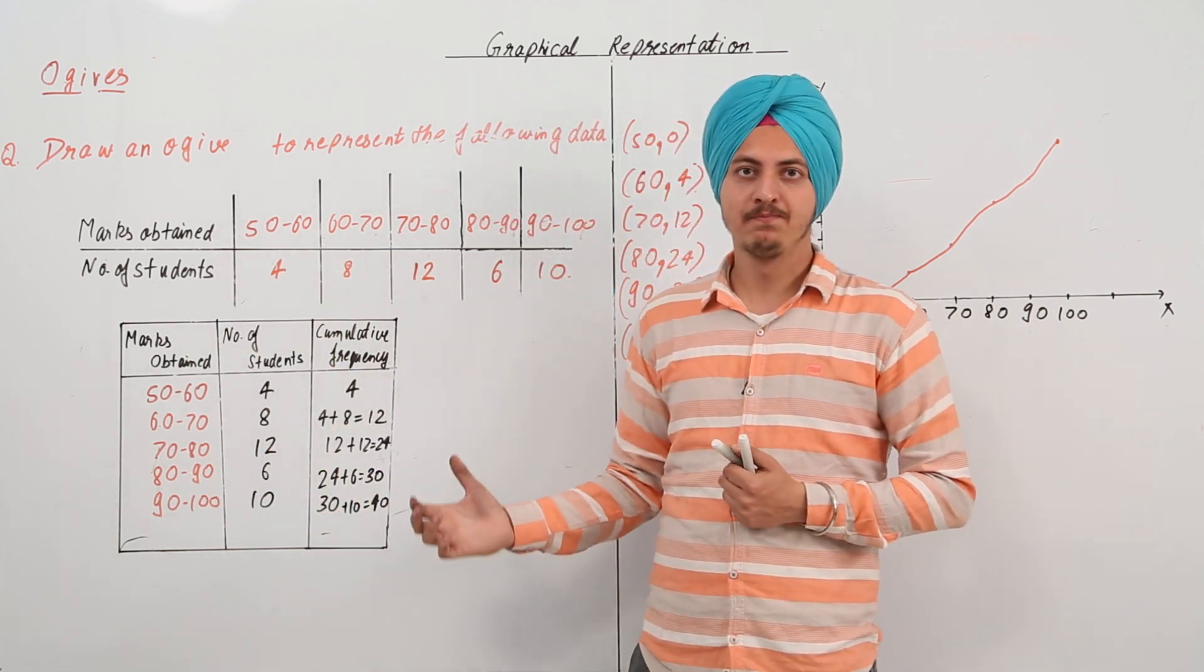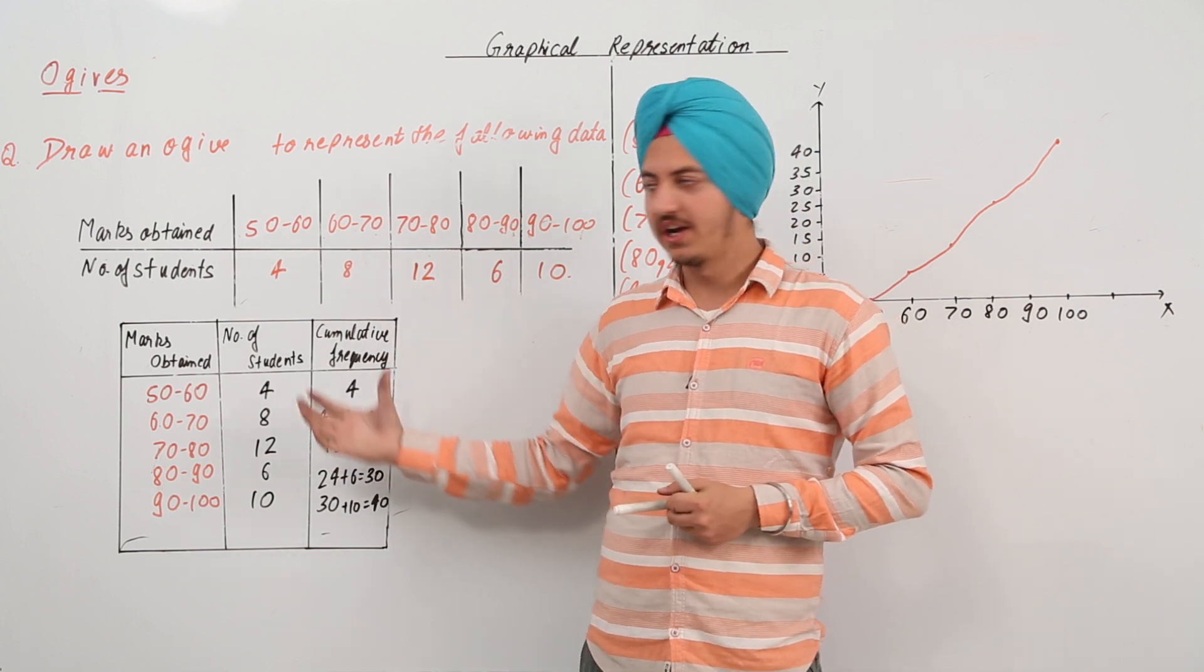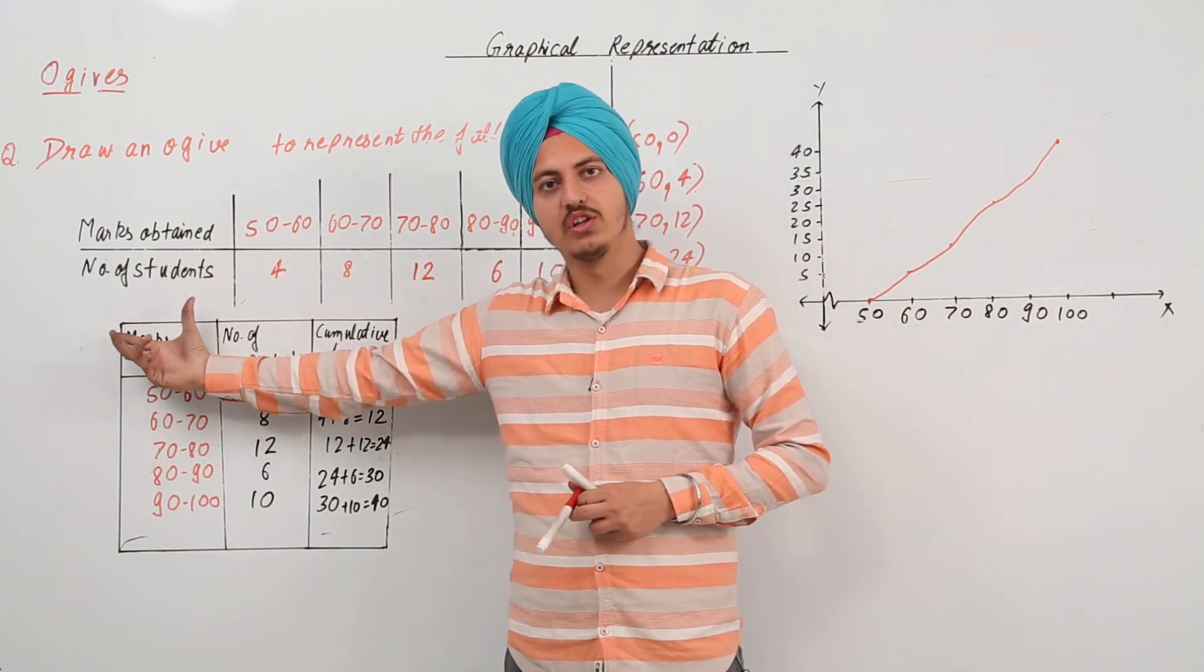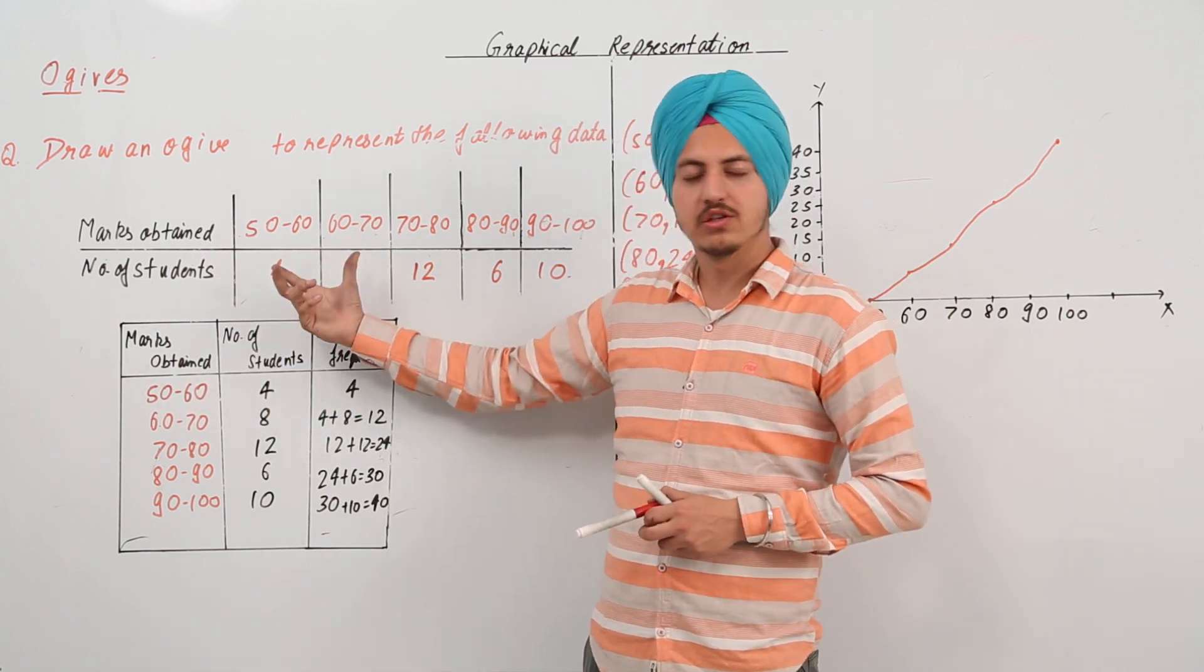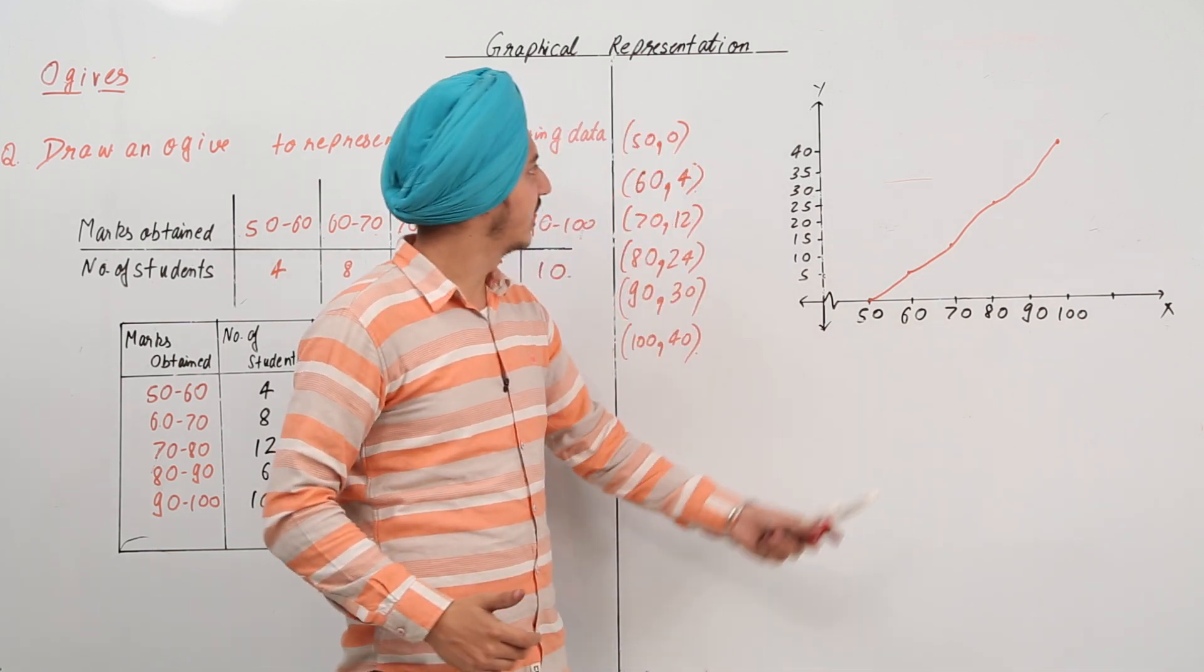Same thing as you did in a histogram. Just make it continuous by the adjustment factor that you found out, find it out, draw another table, mark, change the, write down the adjusted marks, adjusted class intervals and then make the graph.